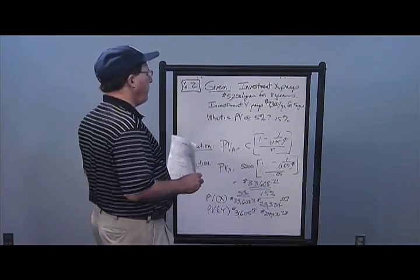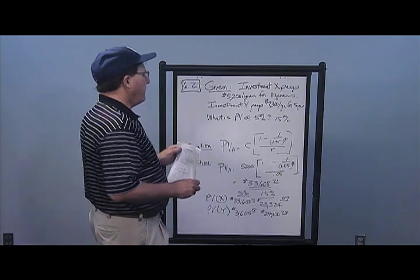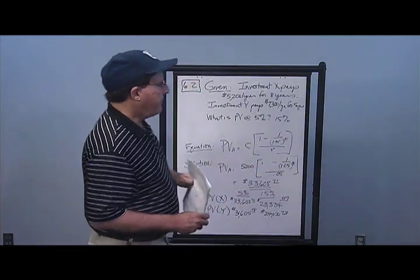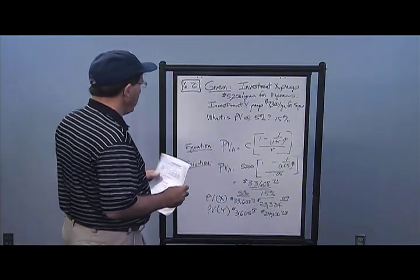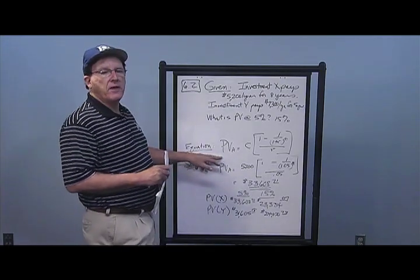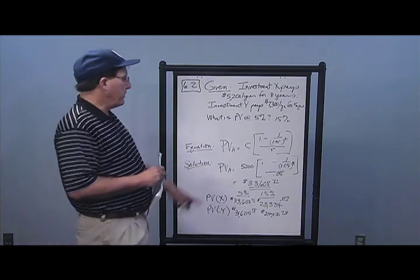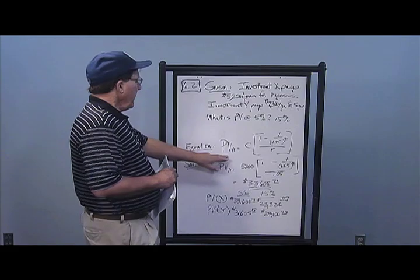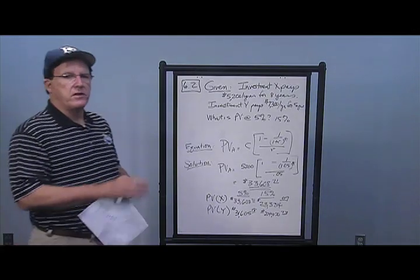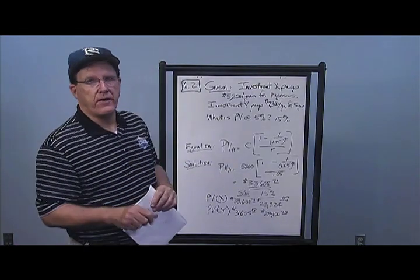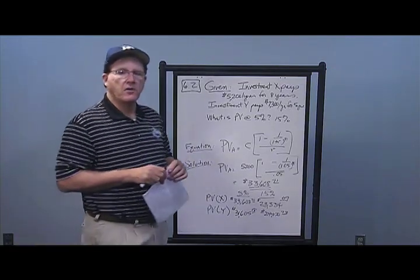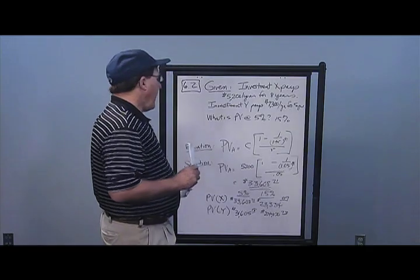$5,200 a year for eight years for Investment X; Investment Y pays $7,300 a year for five years. What's the present value of these cash flows, which is better at a 5% discount rate and a 15% discount rate? I do have an annuity, so PVA equals C times (1 minus 1 over (1 + R) to the T), all over R. Or I could take each individual cash flow — $5,200 over 1.05, plus $5,200 over 1.05 squared, and so on — but that takes much longer and is more prone to error than using the compact present value annuity formula.